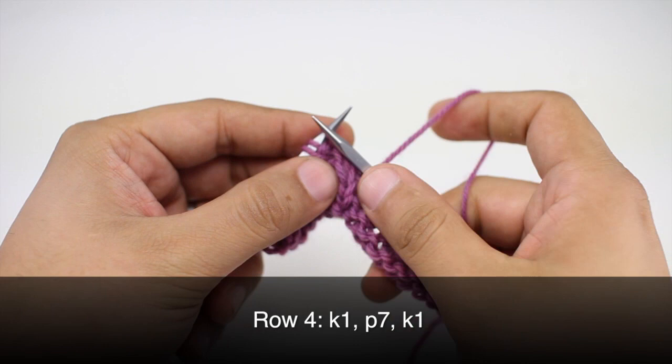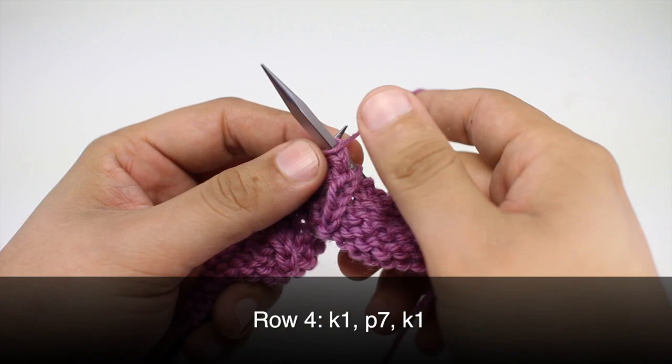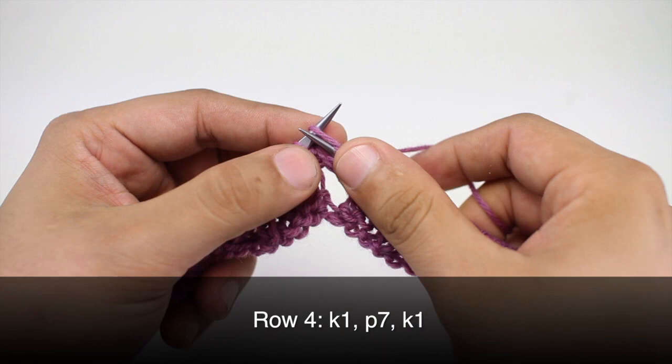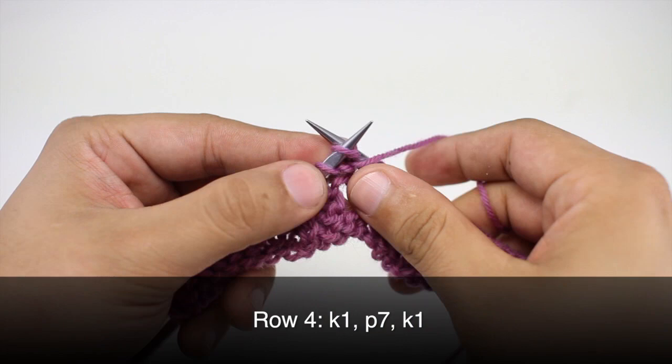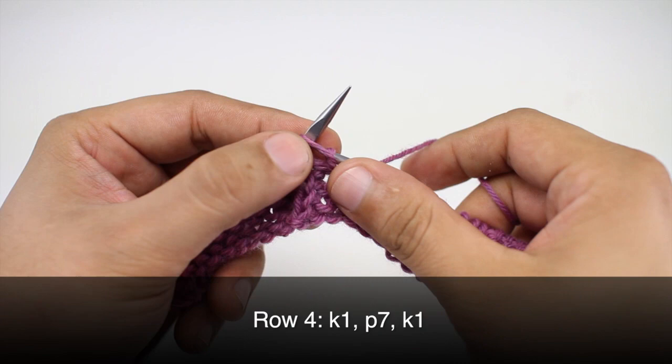Row four: we're going to repeat row two by knitting one. Then purling seven. And we'll finish up by knitting one.